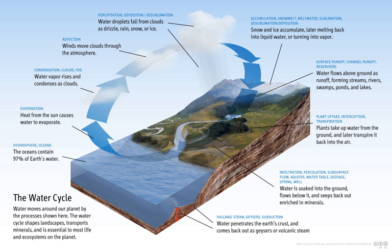Sublimation: the state change directly from solid water to water vapor by passing the liquid state. Deposition: the changing of water vapor directly to ice. Advection: the movement of water through the atmosphere. Without advection, water that evaporated over the oceans could not precipitate over land. Condensation: the transformation of water vapor to liquid water droplets in the air, creating clouds and fog.